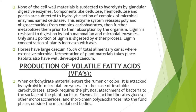The production of volatile fatty acids occurs only in the rumen and colon. Whenever carbohydrate material enters the rumen or colon, it is attacked by bacteria present there. This attack requires the physical attachment of bacteria to the surface of these carbohydrate particles. After attachment, there is a release of hydrolytic microbial enzymes, and this enzymatic action causes hydrolysis of the carbohydrate material, liberating glucose, other monosaccharides and short chain polysaccharides into the fluid phase outside the microbial cell bodies.